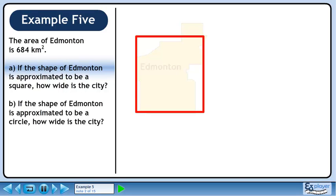Let's draw a square overtop the image of the city. The formula for the area of a square is A equals s squared. Plug in 684 for the area of the square.